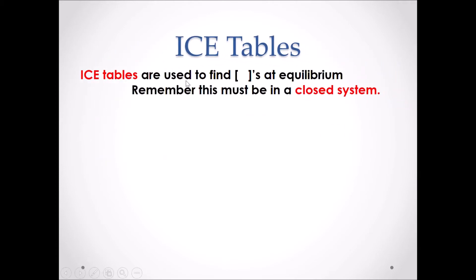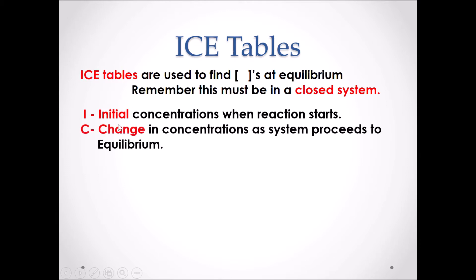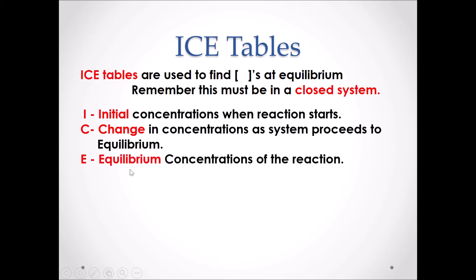Ice tables are used to find the concentration of reactants and products at equilibrium. Remember, for a chemical reaction to be in equilibrium, it must be in a closed system. ICE is an acronym where I represents the initial concentrations of chemical species when the reaction starts, C represents the change in concentration for the chemical species as the system approaches equilibrium, and E represents the equilibrium concentrations of all chemical species when the reaction is at equilibrium.